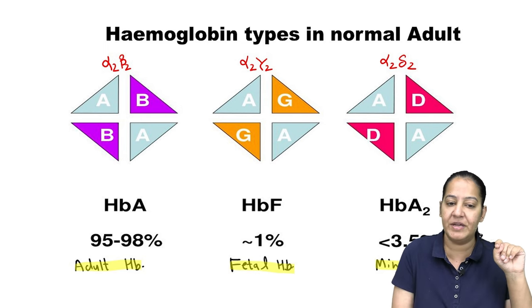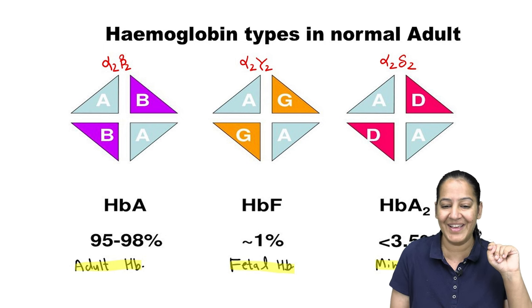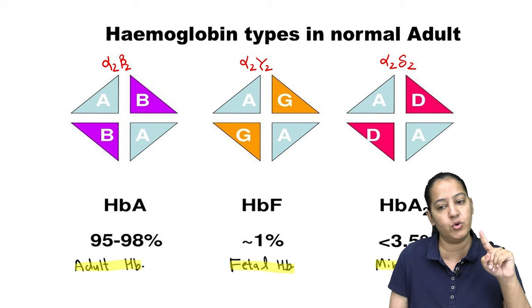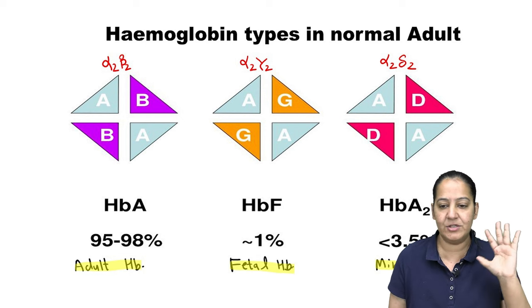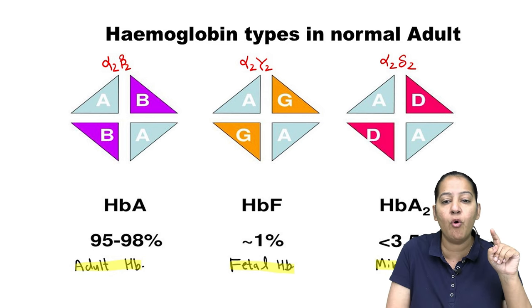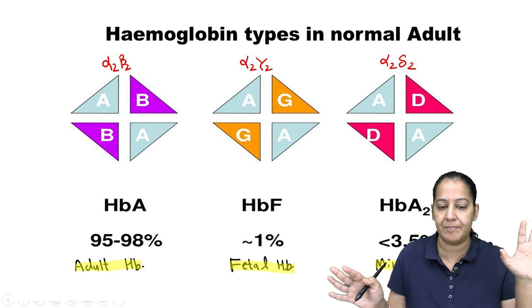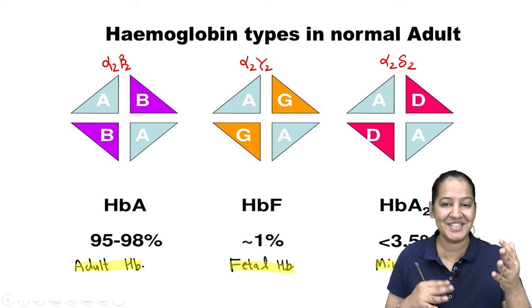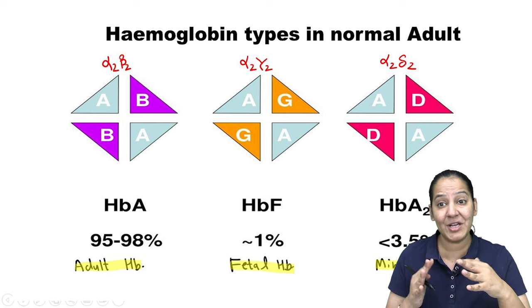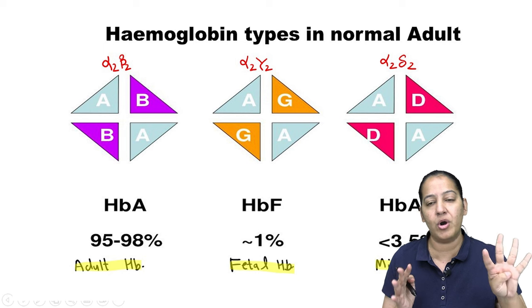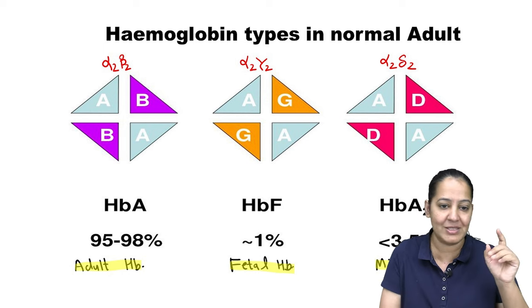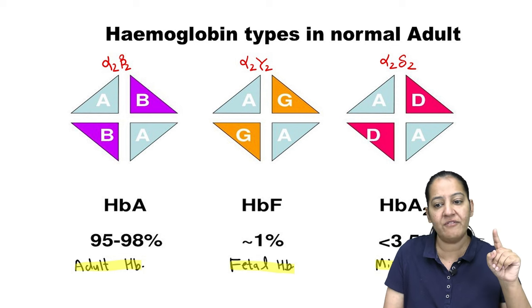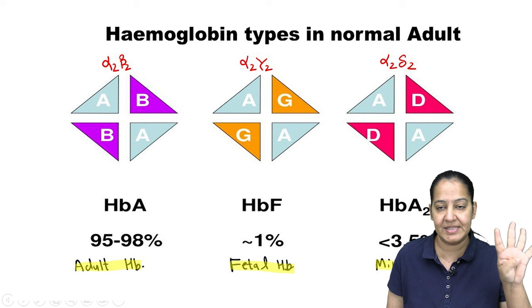Hemoglobin A is 2 alpha + 2 beta chains. Hemoglobin F is 2 alpha + 2 gamma chains. Hemoglobin A2 is 2 alpha + 2 delta chains. So all hemoglobins have 4 globin chains total. I'm not concerned with heme right now because thalassemia is a disorder of globin — it is a globinopathy.